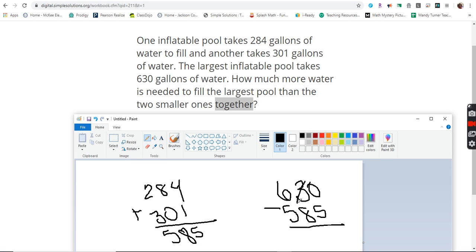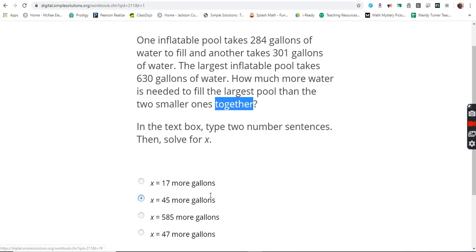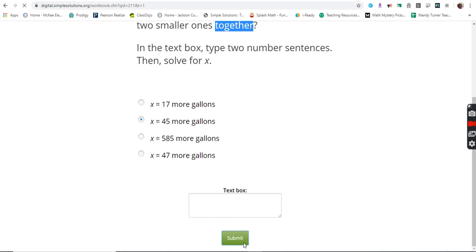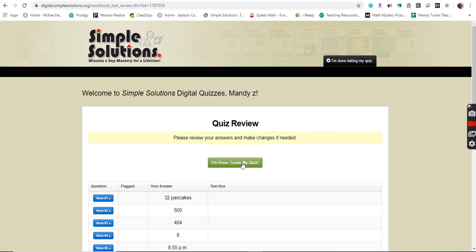Okay. Now I can come over here and do 630 minus 585. I can't take 5 from 0, but I can go next door and get 10 more. 10 minus 5 is 5. I can't take 8 from 2. A 12. 12 minus 8 is 4. 5 minus 5 is 0. So 45.